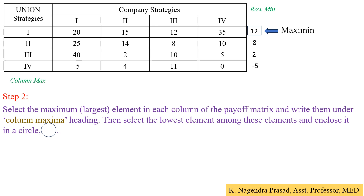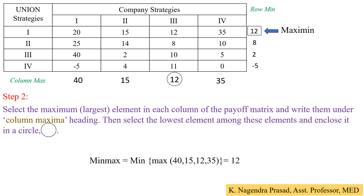Computing the column maxima: the first column maximum is 40, the second column maximum is 15, the third column maximum is 12, and the fourth column maximum is 35. Among these values — 40, 15, 12, and 35 — the minimum value is 12. So 12 is the minimax value.